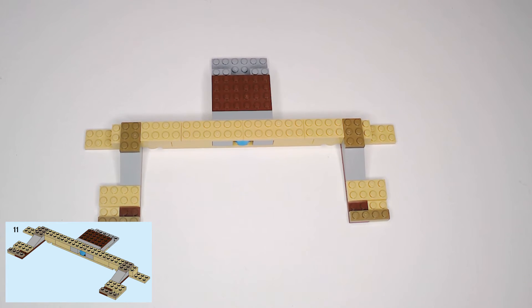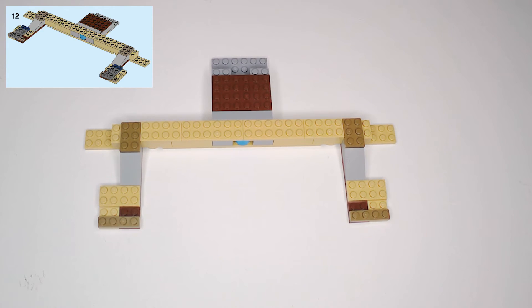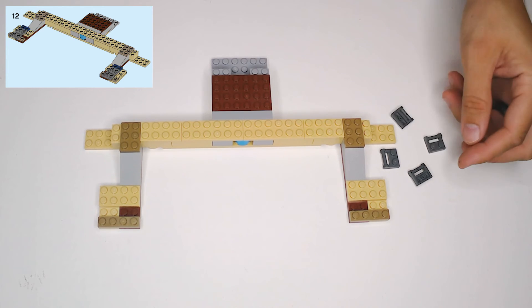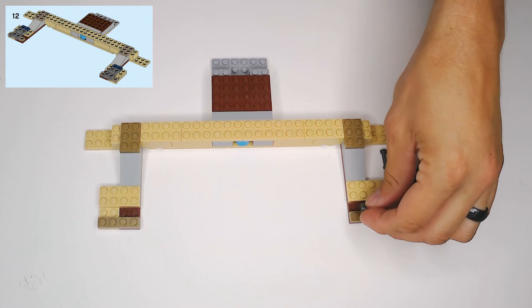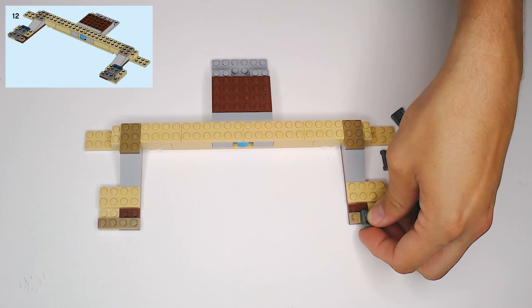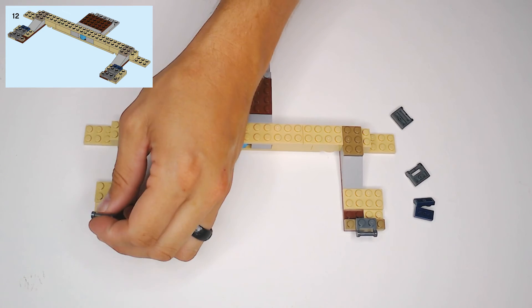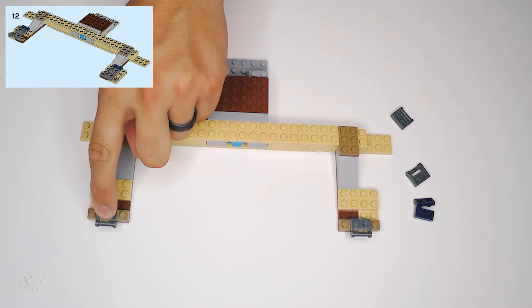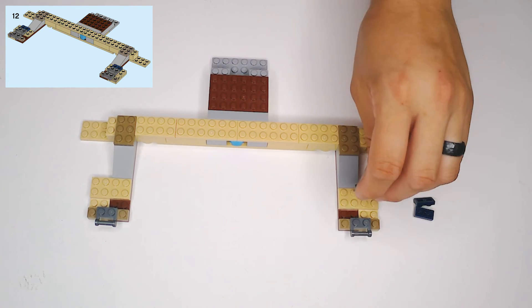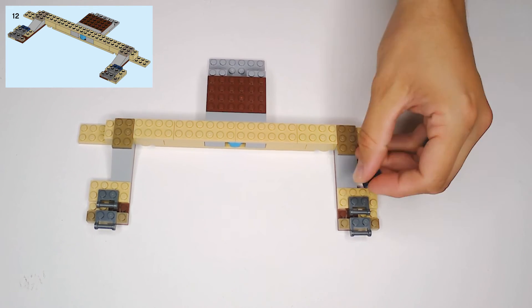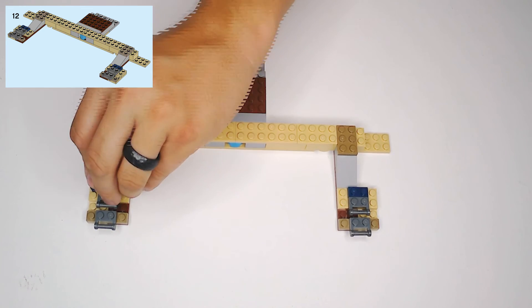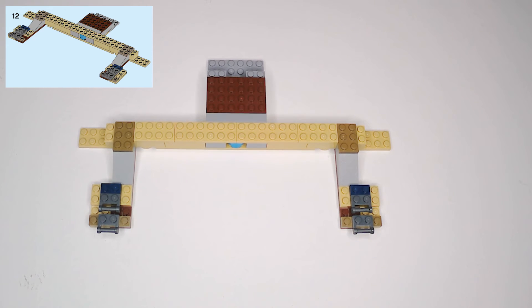Step 12. First, we need to get four of these dark gray 1x2 plates with the long bar handle on the wider side. And there's also two of these dark blue 1x2 plates. First, let's get these pieces with the handle, these dark gray handle pieces, are going to go on the ends. One is there. There's two of them on each end, centered with that dark tan 1x4, and then right behind that on the 2x4 tan plate. And then these dark blue pieces are going to go right behind that handle piece that's on the tan plate.